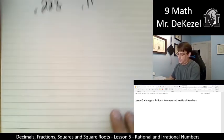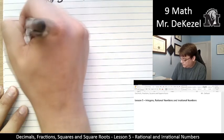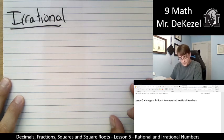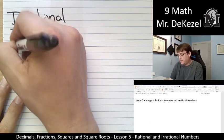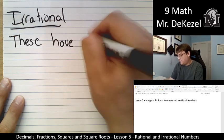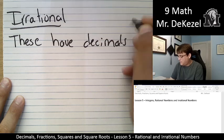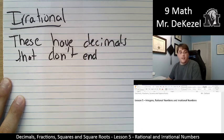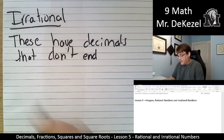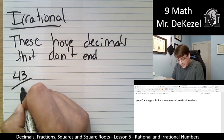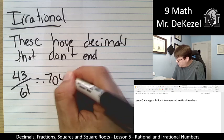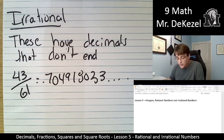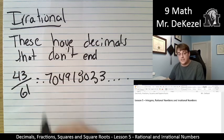So an irrational number... Irrational numbers have decimals that don't end. So these are awkward fractions. Like the one I punched in, 43 out of 61 gives us a decimal of 0.704918033. And there's more after that. So this is an irrational number.